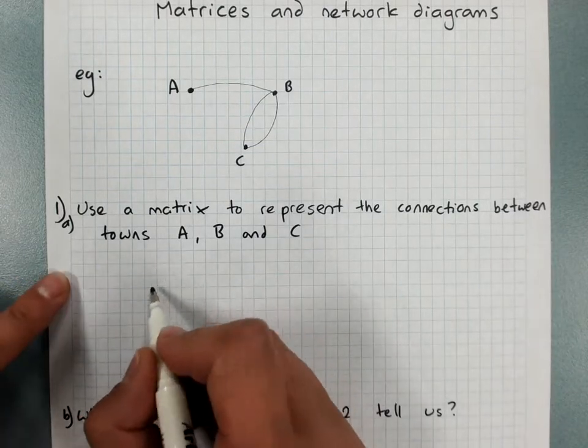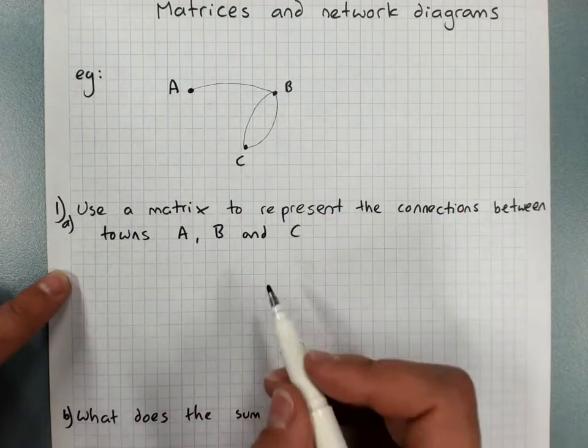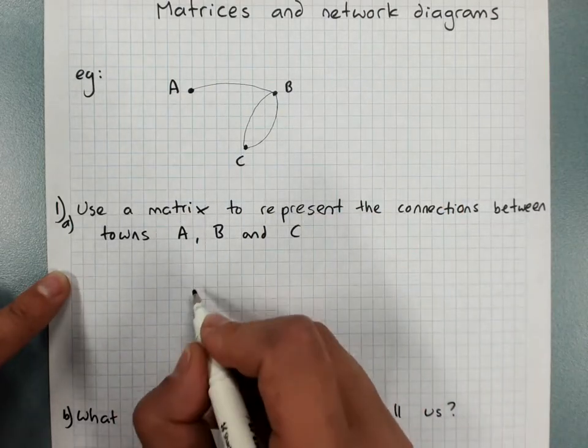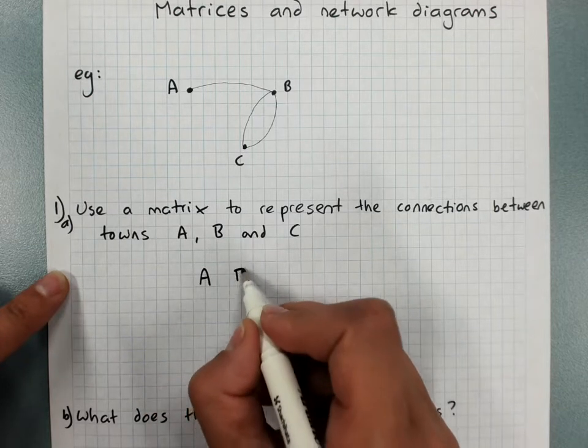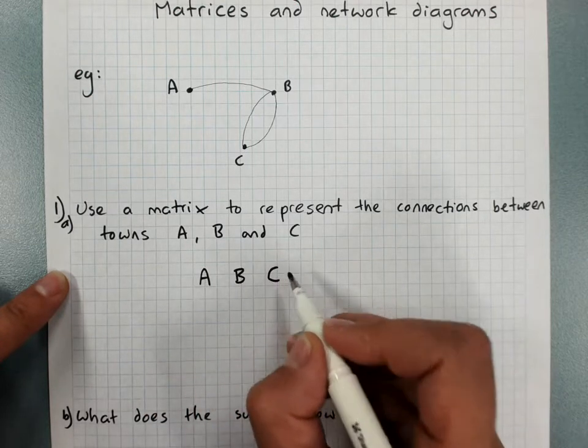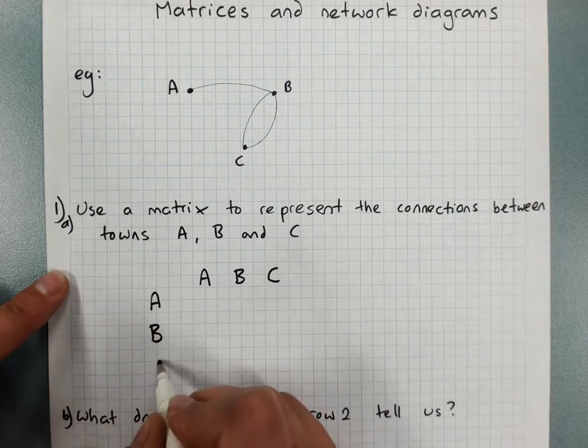So we set up a matrix with a row and a column for every vertex. So we're going to have columns A, B and C, and rows A, B and C.